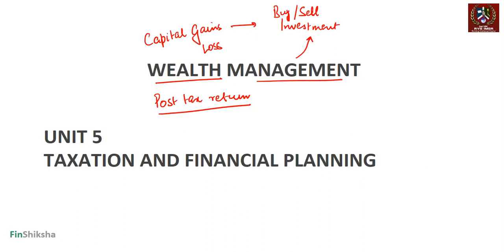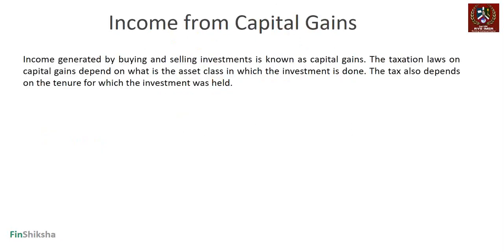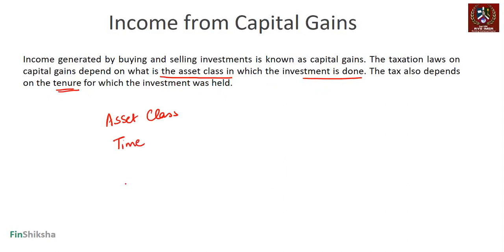Income generated by buying and selling investments is known as capital gains; negative income is a capital loss. The taxation on capital gains depends on two key factors: one, the asset class in which the investment is done, and two, the tenure for which the investment was held. Both of these define what the tax rate is going to be.